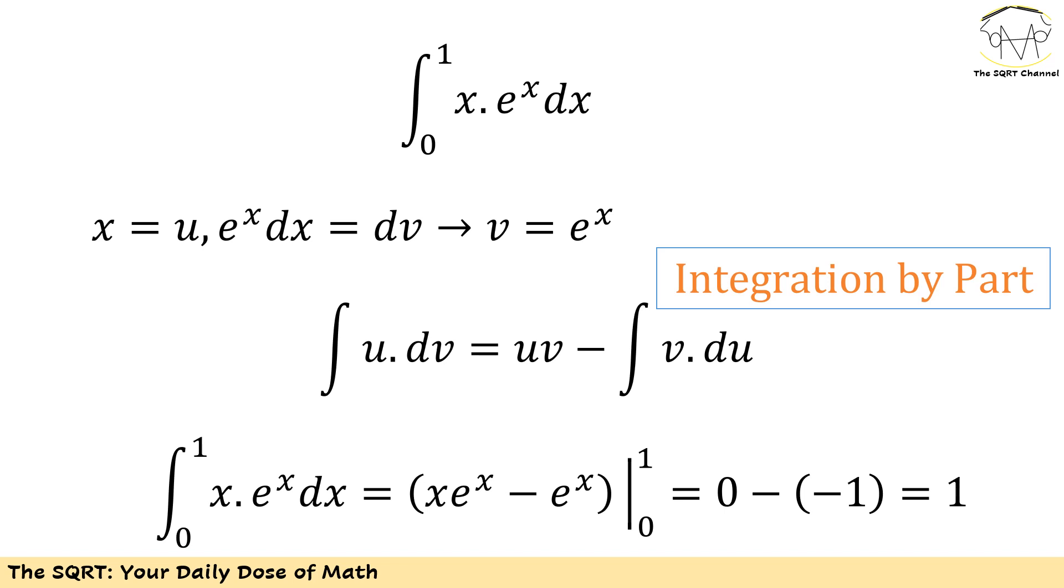Altogether I can write the integral of x e to the power of x dx from 0 to 1 as x e to the power of x minus e to the power of x, and I need to find it from 0 to 1.